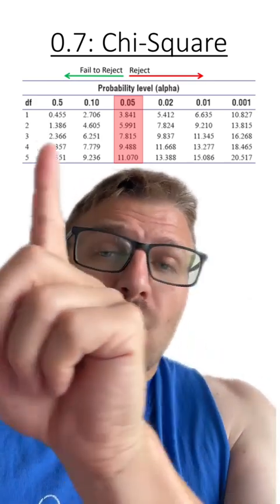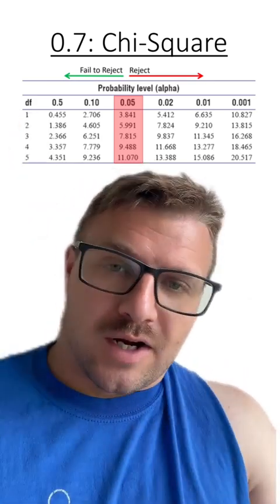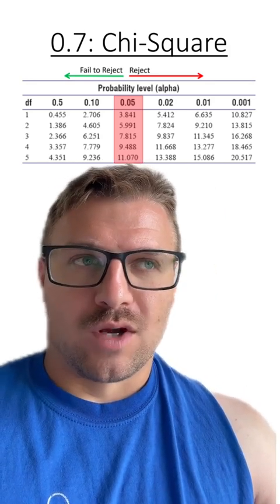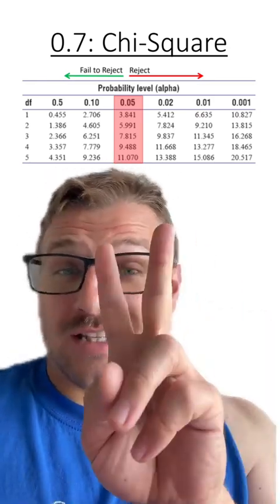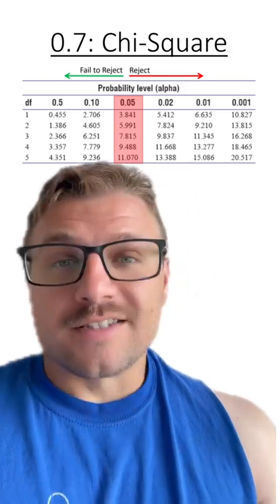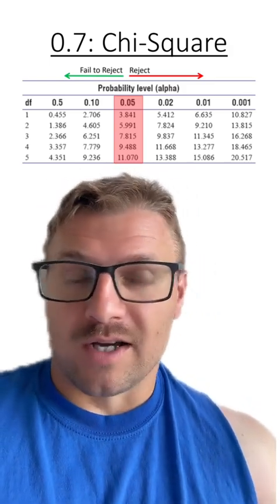Now your next question might be, why isn't there a zero value here? Well, if there's only one value or one possible outcome, then it's really not an experiment. You have to have at least two outcomes. For instance, flipping a coin. There are two outcomes, heads or tails.